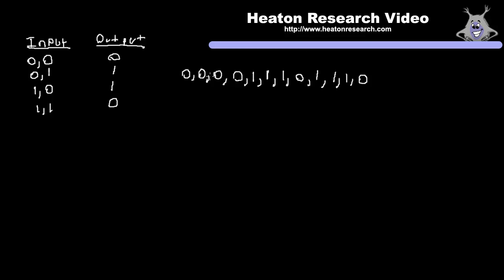The Elman neural network used for this is going to have one input neuron and one output neuron. We're going to basically feed in an input and expect the next number in the sequence out. So the training data is going to become a sequence of pairs. In the first case, we would present a zero and expect a zero back. Then we'd also present another zero and expect a zero back. Then we look at the next pair — it's also zero, zero. Then we have a zero and we expect a one.